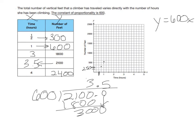At 3 hours the value is 1,800, and at 4 hours it's 2,400, which is close to the top. You would draw a straight line through all those points. If I had a ruler I would draw that straight line through them.